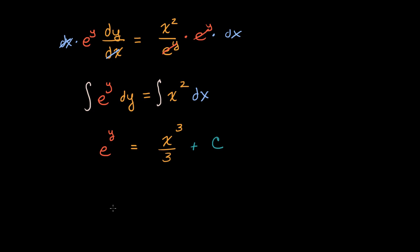And just to finish up, especially if on a lot of examinations like the AP exam, they might want you to write in a form where y is explicitly an explicit function of x. So to do that, we can take the natural log of both sides. So we take the natural log of that side, and we take the natural log of that side.